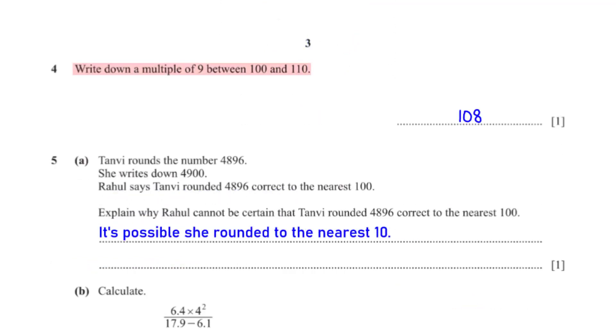Write down a multiple of 9 between 100 and 110. The multiple of 9 between 100 and 110 is 108.